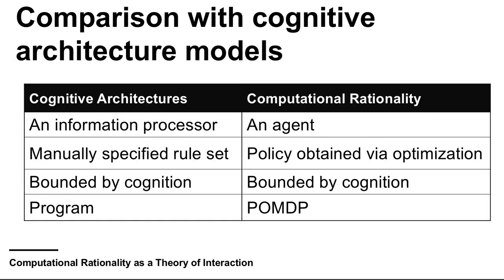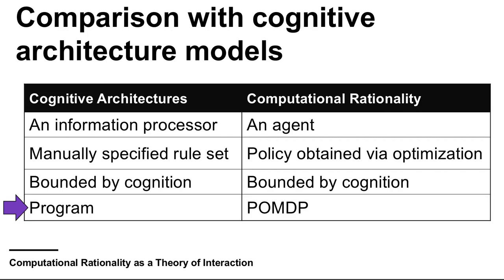Let us compare this more closely with the familiar cognitive architecture paradigm. While cognitive architecture models treat cognition as an information processor, in computational rationality the key purpose of cognition is to pick actions that are beneficial for the agent. While cognitive architecture models have a researcher manually specify a rule set, in computational rationality a policy is obtained via optimization — for example, using reinforcement learning. Both approaches share the idea that behavior is limited by cognition, but cognitive architectures express theory as a program or rule set, whereas computational rationality uses decision-theoretic formalisms, such as POMDPs — partially observable Markov decision processes.